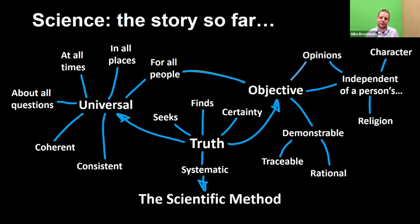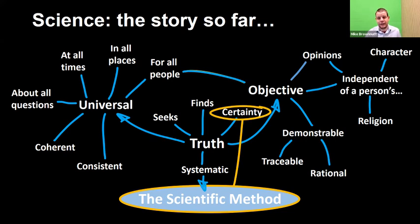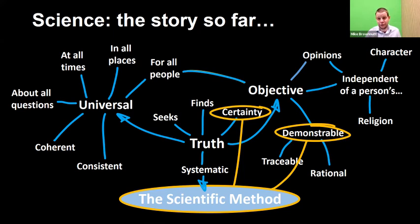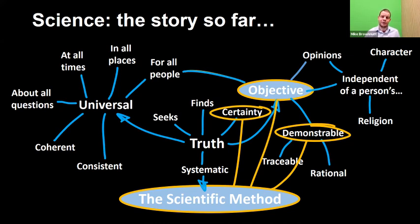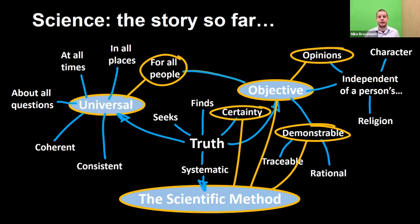We started by looking at the scientific method and realized there are at least scientific methods, and we're not sure if we follow or want to follow any of them. Popper pointed out that this started to undermine certainty; Quine pointed out that this started to undermine demonstrability. And we realized that in picking which scientific methods we want to use and which science we want to pursue, we started to undermine objectivity. The science you think is worth pursuing depends on your opinions, and opinions are not the same for all people — and as soon as we say that, we're starting to undermine universality.